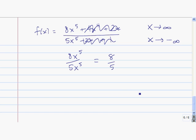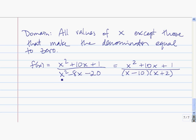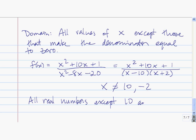Now let's talk about the domain of a rational function. The domain is fairly easy to find — it's just all values of x except those that make the denominator equal to 0. For example, f of x equals x squared plus 10x plus 1 divided by x squared minus 8x minus 20. To find the domain, we need to find what makes the denominator equal to 0. This denominator factors as x minus 10 times x plus 2. 10 makes the first factor equal to 0 and negative 2 makes the second equal to 0. So x cannot be equal to 10 and it cannot be equal to negative 2. The domain is all real numbers except 10 and negative 2.